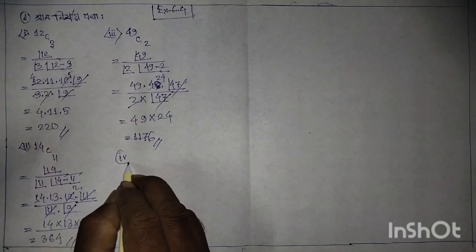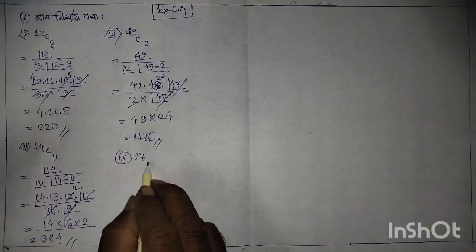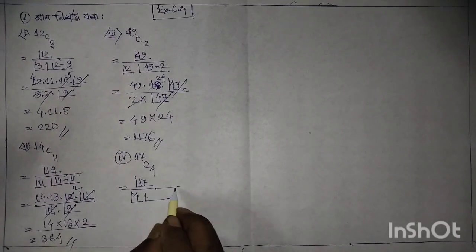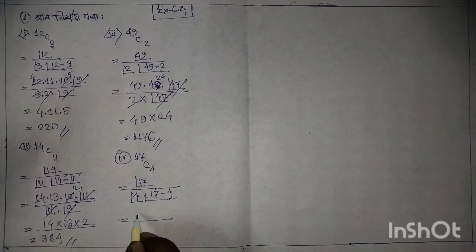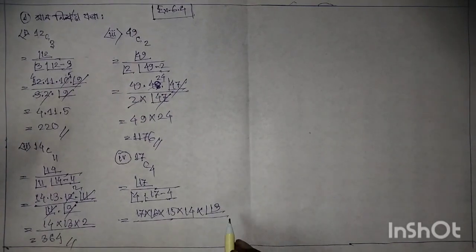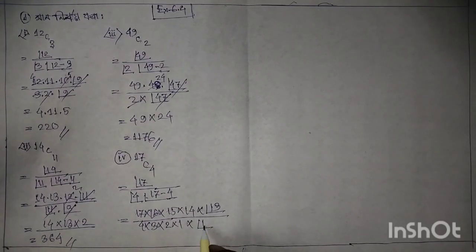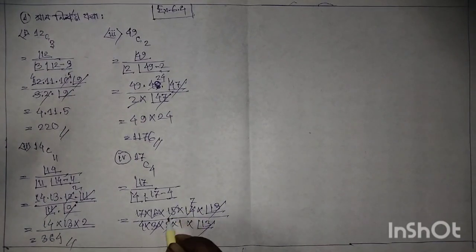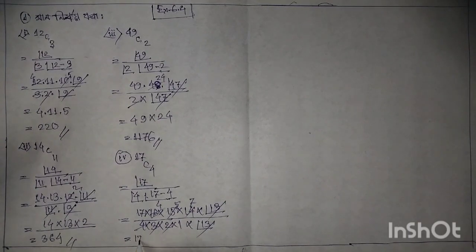Expression 4: 17 C 4. And again, factorial 17 by factorial 4, factorial 17 minus 4, equal to 17 into 16 into 15 into 14 into factorial 13, by 4 into 3 into 2 into 1, and again factorial 13. 2740, 7 times, TJ 15 at 5 times, 460, 4 times, 0 to 17 into 4 into 5 into 7.